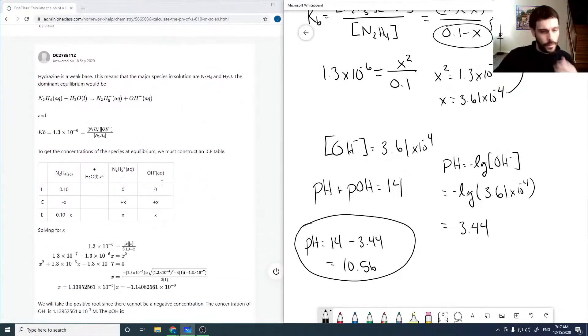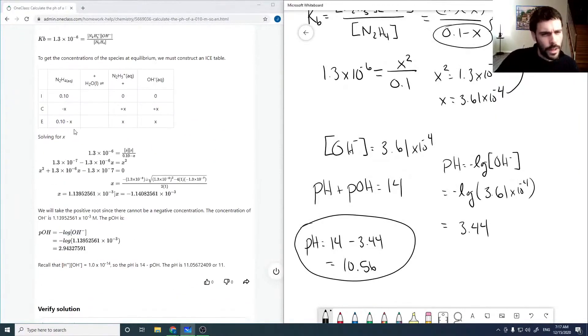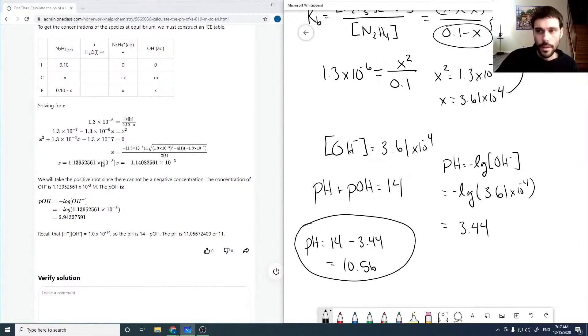Okay. Now we're going through our solution here. So that looks good up to here. But then the x they get is 1 times 10 to the minus 3. If I run through their numbers, I get closer to 3.6 times 10 to the minus 4. So that means there was a calculator error somewhere in here.